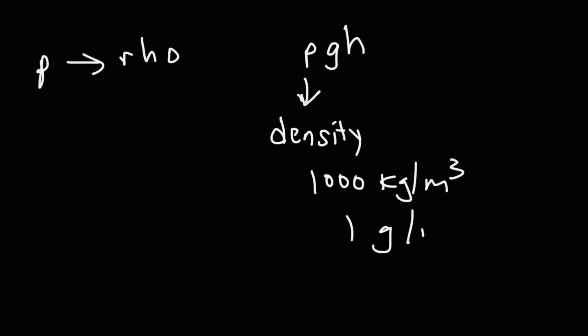The next Greek symbol is rho. If you're taking physics, you might see this when you're dealing with gauge pressure, where it's equal to rho gravitational acceleration times height. So in this case, rho represents density. So in this particular formula, it's the density of a fluid. The density of water is 1,000 kilograms per cubic meter. That's in physics, but in chemistry, it's 1 gram per milliliter.